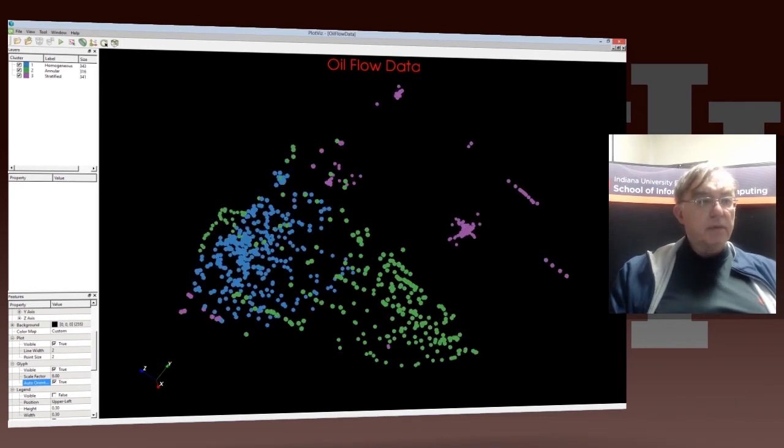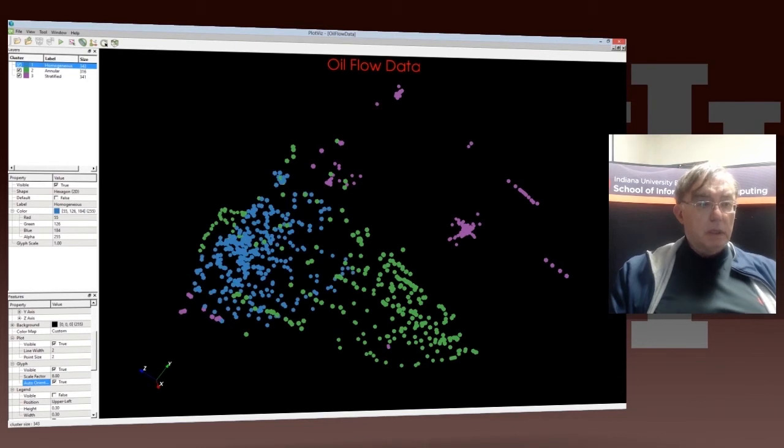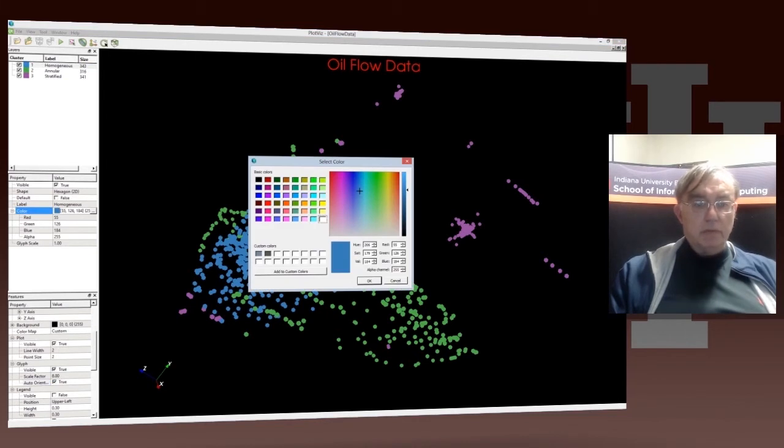And of course, we can come up here and look at homogeneous. That is a symbol. Actually, I just removed it. I can get it back to you. And then we come down here and maybe change it to a different color. Let's see what color should we have.